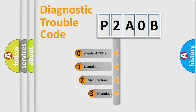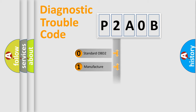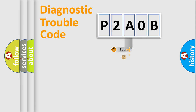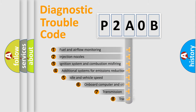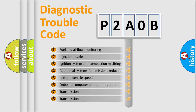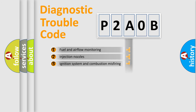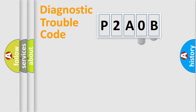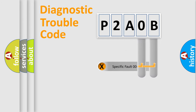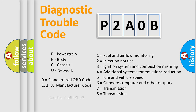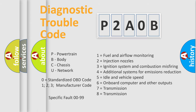If the second character is expressed as zero, it is a standardized error. In the case of numbers 1, 2, or 3, it is a more specific expression of a car-specific error. The third character specifies a subset of errors. This distribution is valid only for the standardized DTC code, and only the last two characters define the specific fault of the group.